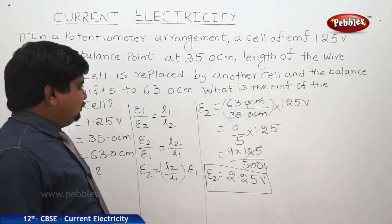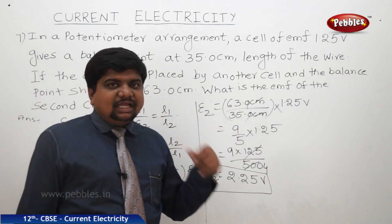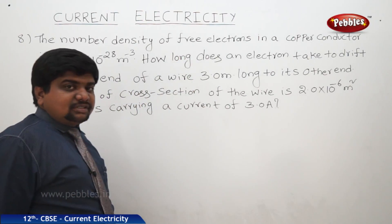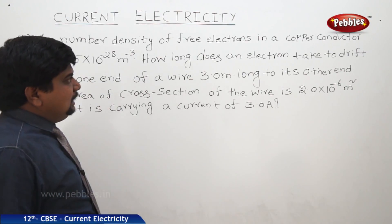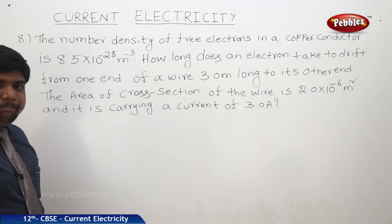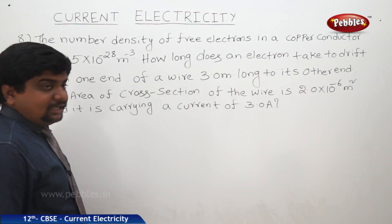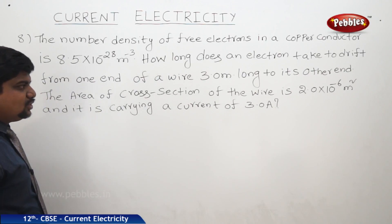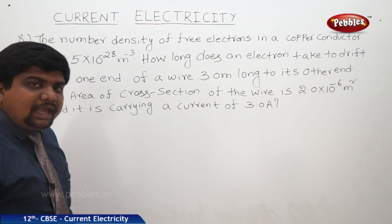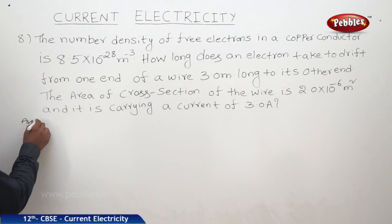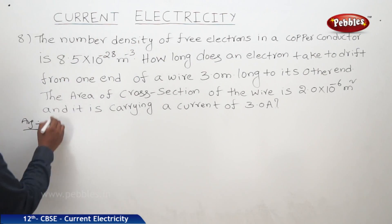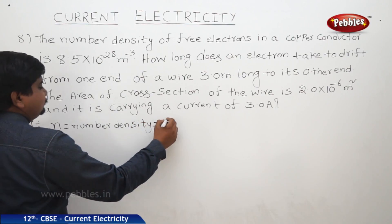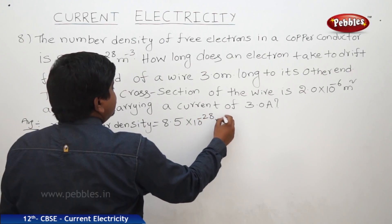So for this EMF the balancing length shifts from 35 to 63 centimeters. Now we'll see a problem relating to drift velocity and conductor dimensions. The number density of free electrons in a copper conductor is 8.5 × 10²⁸ per meter cubed. How long does an electron take to drift from one end of a wire 3 meters long to the other end?